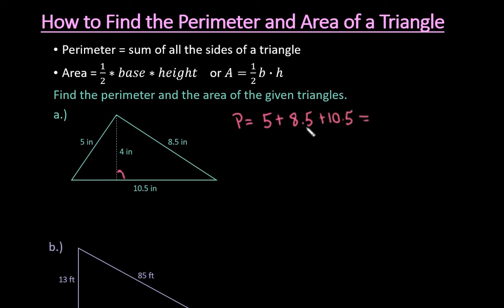When I add this together, 10.5 plus the 0.5 would put me at 11, plus 8 would put me at 19, plus 5 would put me at 24. The units for the perimeter are always going to be the same as what is in your figure.